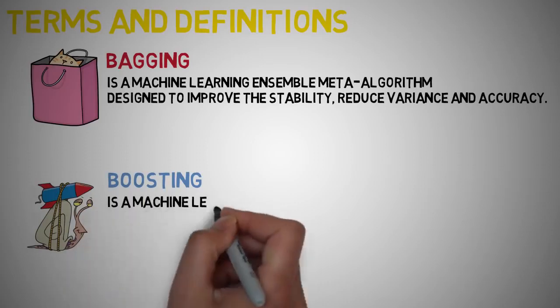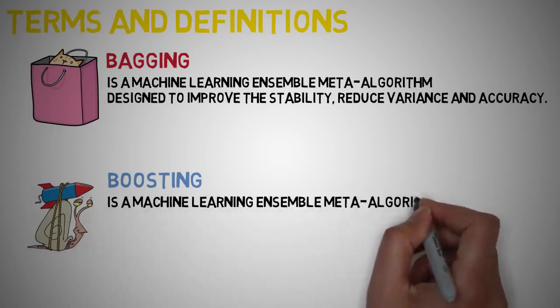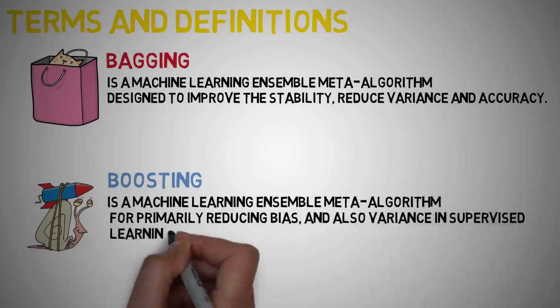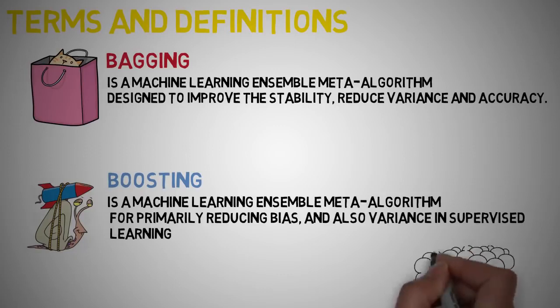Boosting is a machine learning ensemble method algorithm for primarily reducing bias and also variance in supervised learning, and a family of machine learning algorithms which also convert weak learners into strong ones. Algorithms that achieve hypothesis boosting quickly become simply known as boosting.